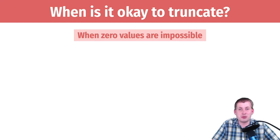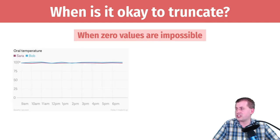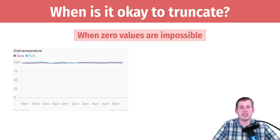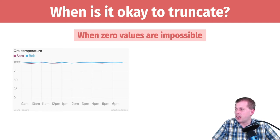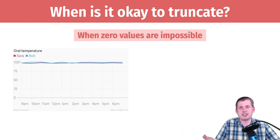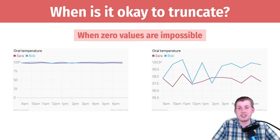It's also okay to truncate when zero values are impossible. Consider a chart showing the temperature of two people, Sarah and Bob. If you're an axis purist and start at zero, you can't tell who has a fever. In the human body, going from 98°F where you're fine to 100°F means you have a fever — just a two-degree difference. If someone drops to 50 degrees, they're not alive anymore. Showing the truncated version is far more helpful even though the axis is truncated.